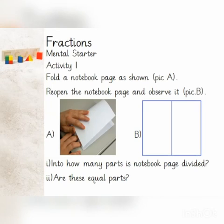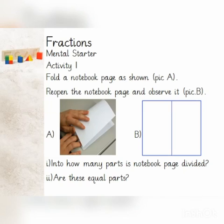Starting our lesson with a Mental Starter, let's do the given activity. Take a notebook paper and fold it as shown in picture A. Reopen the paper and observe it as shown in picture B. Answer these questions: Into how many parts is the notebook page divided? These are two parts. Are these equal parts? Yes, these are equal parts.